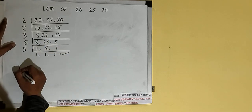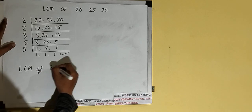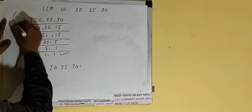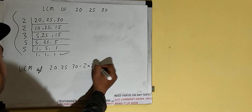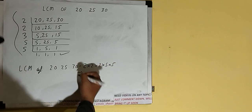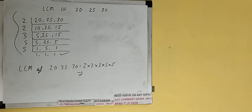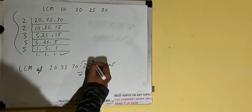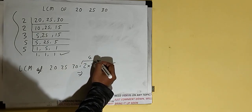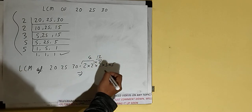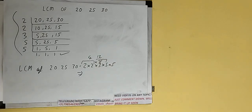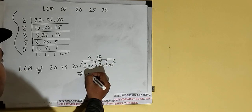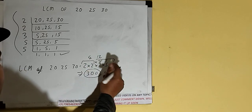Once we get all 1s, we stop. The LCM of 20, 25, and 30 is found by multiplying everything on the left-hand side: 2 times 2 times 3 times 5 times 5. So 2 times 2 is 4, multiplied by 3 is 12, multiplied by 5 is 60, and multiplied by 5 is 300. So the LCM is 300.